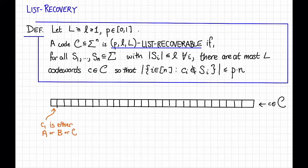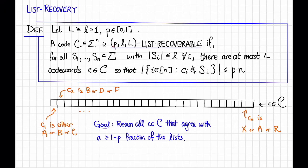And let's say we know that the second symbol, C2, is either, I don't know, B or D or F. And so on. And we have a constraint like this for every single symbol all the way up to C sub n is either X or A or R, or something like that. Now it is our job to find all of the codewords in this code that satisfy these constraints, or at least satisfy them for at least a 1 minus p fraction of the symbols. And we say that a code is p comma little l comma big L list recoverable if there are no more than big L such codewords.